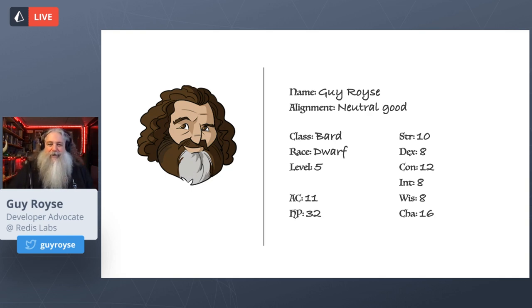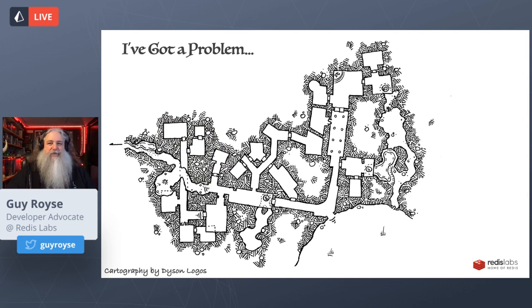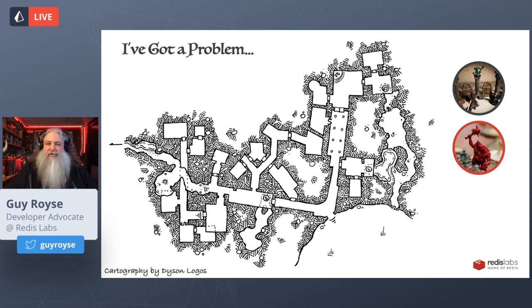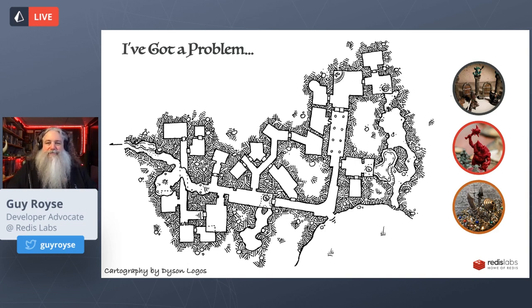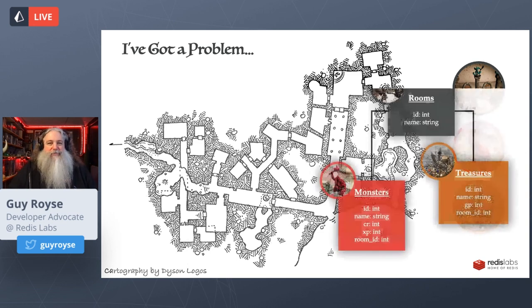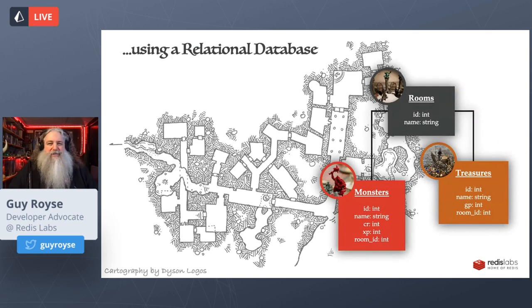As a Dungeons and Dragons player, I've got a problem: I need to go through the dungeon and level up my character. To do that, I need to find the best rooms and the monsters that have the right level of experience that I can overcome, and that can get me the most treasure so I can get the gold I need to buy more equipment — that virtuous cycle of leveling up. And I thought, I'm a developer, I could just put this all in a database — using a relational database with tables, columns, and one-to-many relationships, or I could use a graph database with nodes and edges.